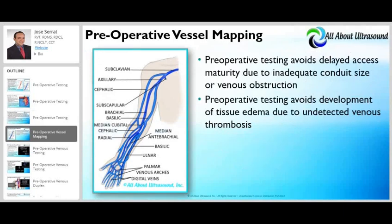Before going into the detail of the dialysis access protocol, let's refresh the anatomy of the upper extremity veins. We have the deep and superficial systems. Subclavian, axillary, and brachial, as well as radial and ulnar veins are considered deep veins. Superficial veins include the cephalic, basilic, and median cubital veins.